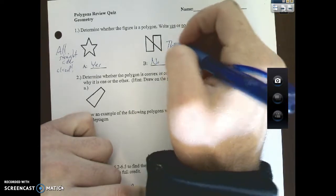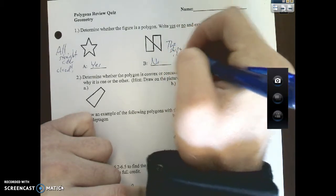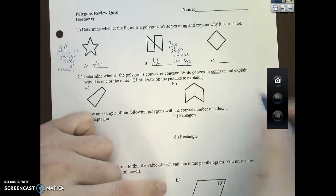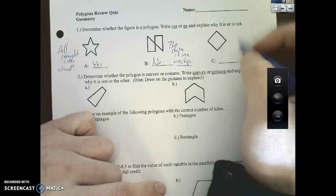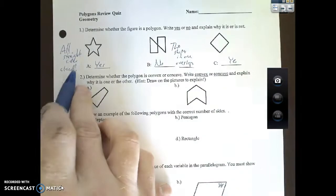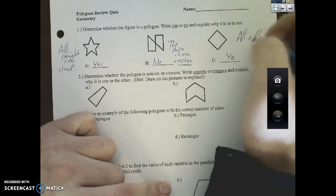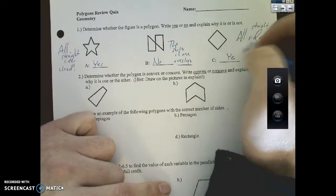This is no because it's actually two shapes in one and it overlaps. It doesn't follow our definition of polygons. Finally, over here this is going to be a yes, and if it is yes pretty much you're just giving the same reason all the time: all sides straight or all straight sides and closed.